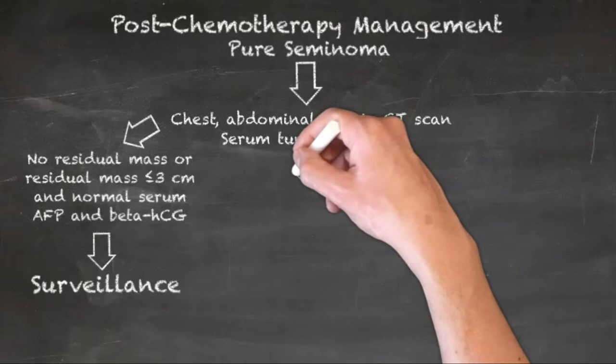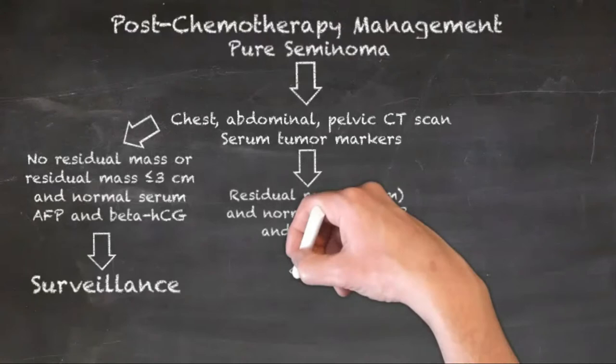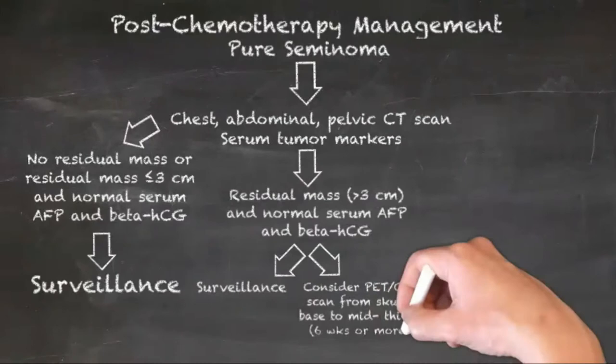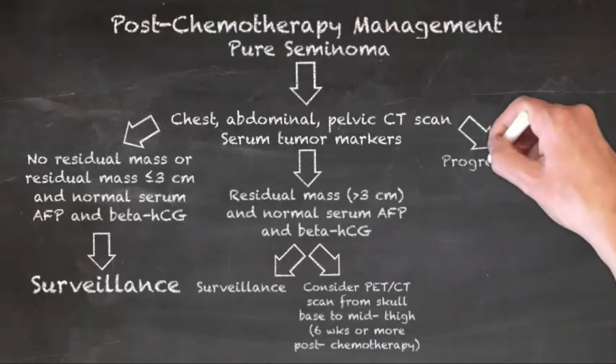Patients with a residual mass measuring more than 3 cm and a negative PET result after chemotherapy should undergo an abdominal pelvic CT scan with contrast every 6 months for the first year and then annually for 5 years.